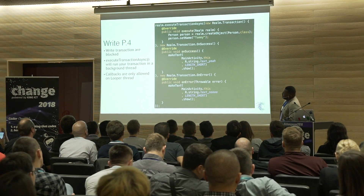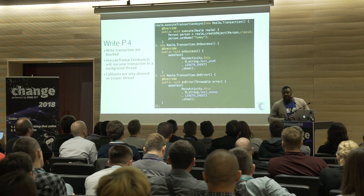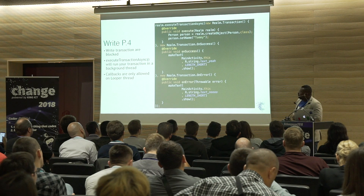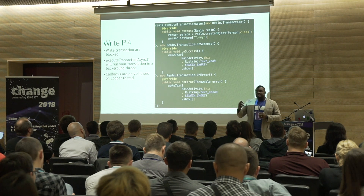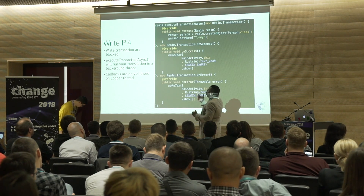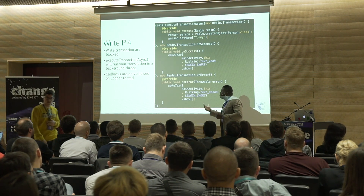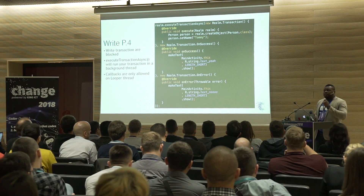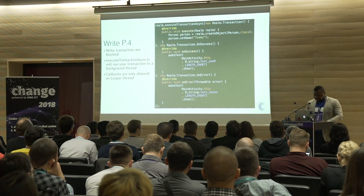Although Realm is really fast, write transactions are blocking. So it is very important not to run them on the main thread or UI thread. By using executeTransactionAsync, Realm will make sure your transactions are performed on a background thread and call you back on the caller thread if you provide callbacks — whether it was successful or failed. But remember that the callbacks, when provided, need to be inside a thread which has a Looper, otherwise Realm will throw a bad exception.